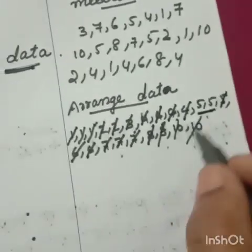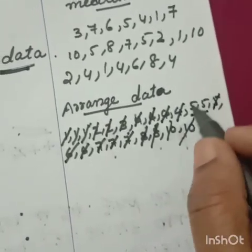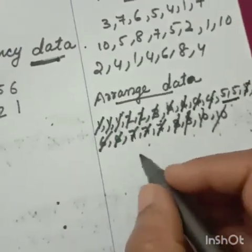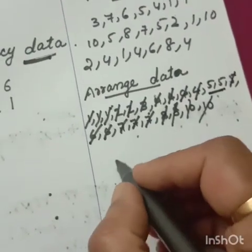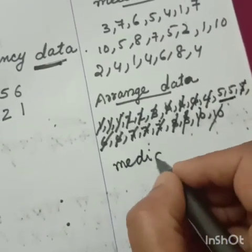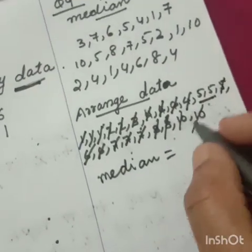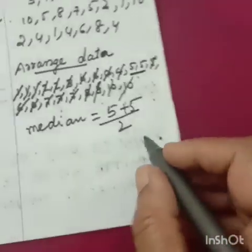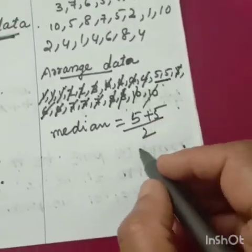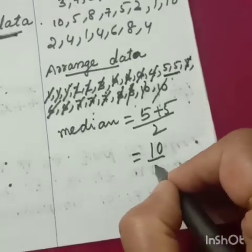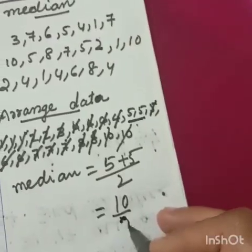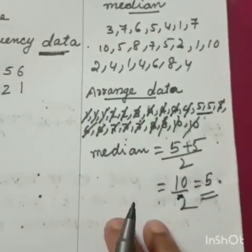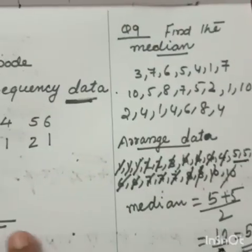Now 2 numbers left out. You can't cut out these 2. Then you will not get any number. So if 2 left out then you have to take the mean of these 2 numbers. You have to add and divide by 2. Always you have to divide by 2. Median equal to 5.